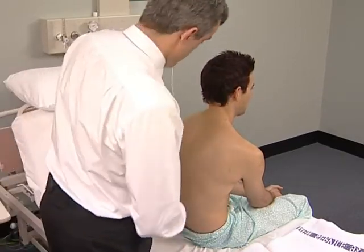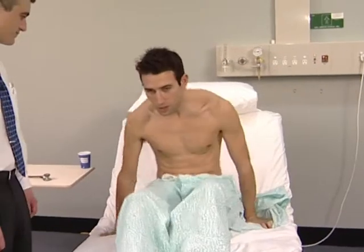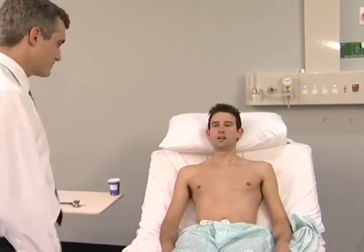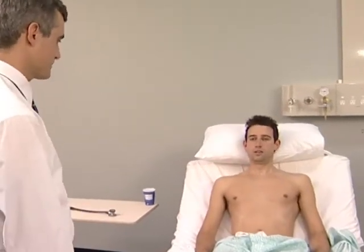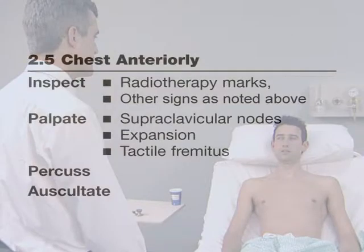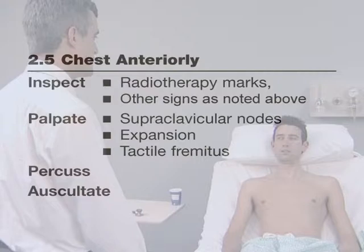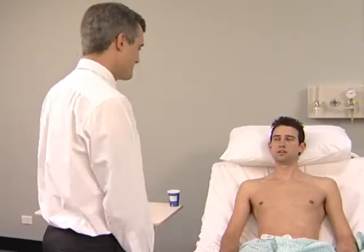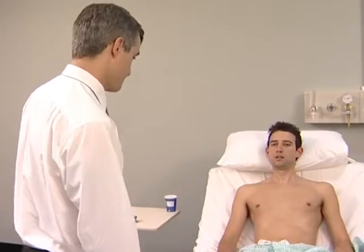Get the patient back in bed. The examiner moves around to the front of the chest and stands back to make a general inspection for scars and for the small tattoos used as markers for radiotherapy fields. The skin may appear erythematous if the area has received a course of radiotherapy. The supraclavicular nodes are examined here if this has not been done from behind.